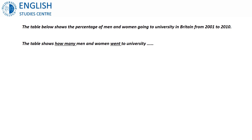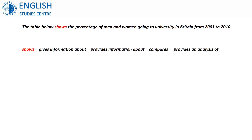But what you can do safely and without making mistakes is to change the vocabulary. Let's look at the original question again. There are all kinds of words and phrases that we can use instead of 'shows.' We can say 'gives information about,' or 'provides information about,' or 'compares,' or 'provides an analysis of.'